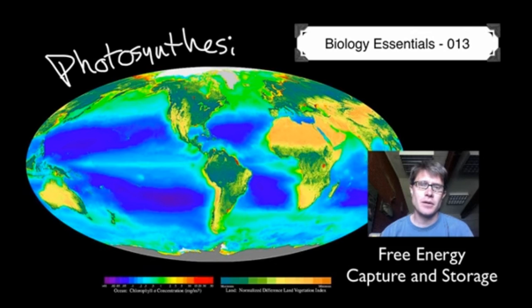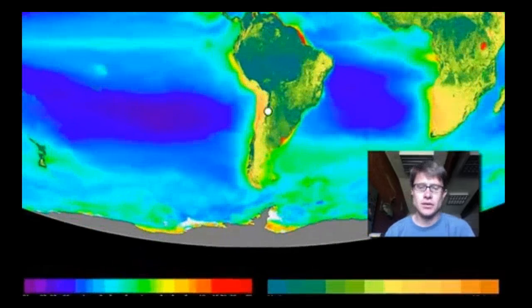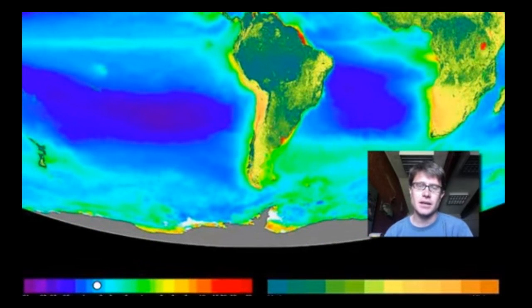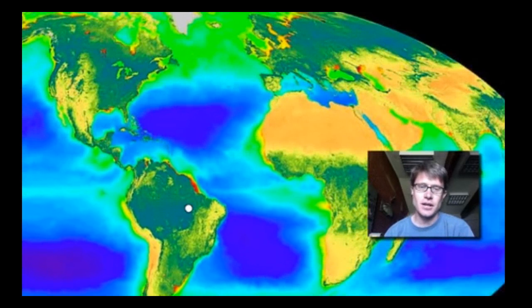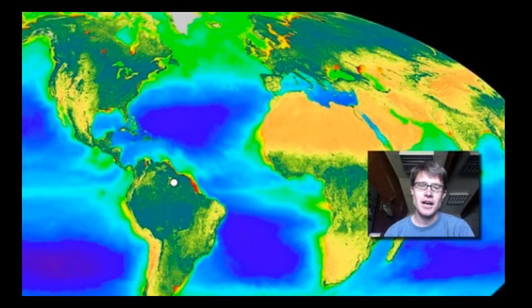And this is actually a map of photosynthesis on our planet. So what you can see, this is both on land and on the ocean. You'll see that photosynthesis is going to be highest in areas like here, South America. That would be the Amazon. Or eastern North America. Or you'd find it in a lot of northern Europe and northern Asia.